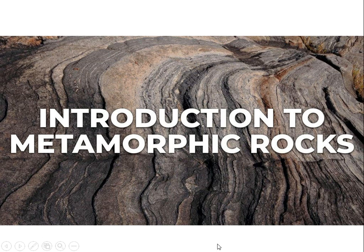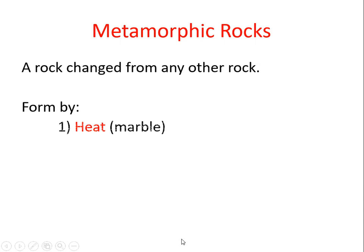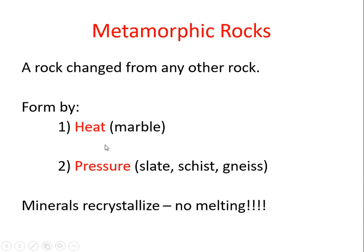How do these rocks actually change form? The primary mechanism or process involved is both heat and pressure. Heat and pressure actually create new rocks, and they do this by recrystallizing the minerals. It's a recrystallization process, however, that does not include melting. Once it melts, it becomes magma and or lava, and so it would no longer be considered a metamorphic rock. This is a rock that has changed form from any other rock by heat and pressure.